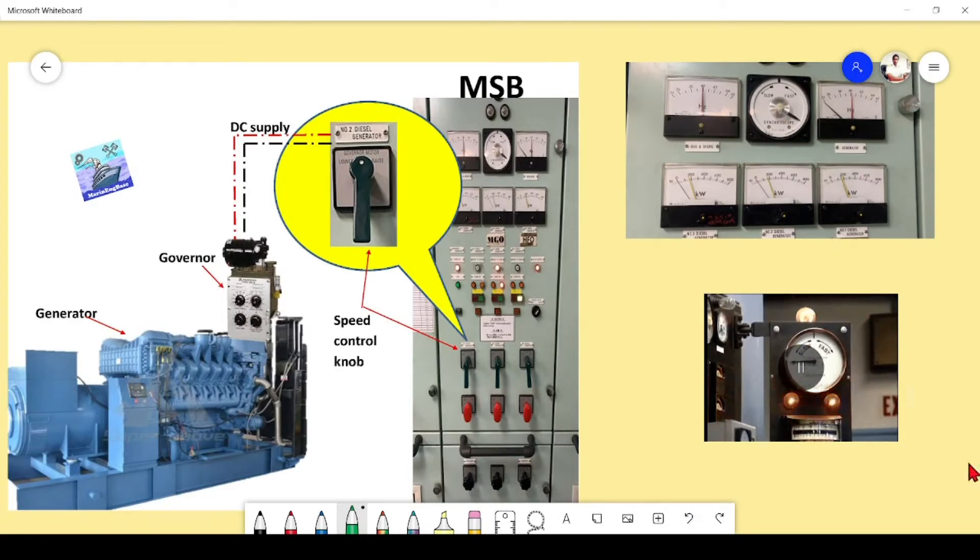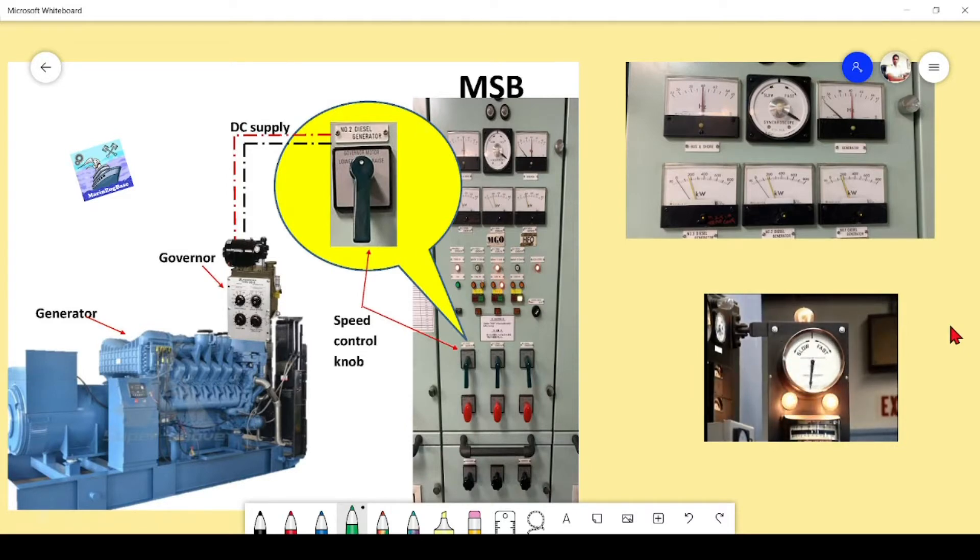In this animation we can see how this synchroscope works. There are many types of synchroscope: this is pointer type, some are with LED light rotating, and the three lamp method, two lamp methods. In another video I will describe the principle behind the synchroscope and how it's connected to the bus and to the incoming generator. In this case, this device is the similar item here.